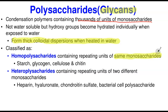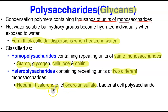Homopolysaccharides contain repeating units of the same monosaccharide. Good examples are starch, glycogen, cellulose, and chitin — all made up of the same monomeric unit. Heteropolysaccharides contain repeating units of two different monosaccharides, so their makeup involves more than one type. Good examples are heparin, hyaluronate, chondroitin, and the bacterial cell wall polysaccharide, which plays an important role in strength, rigidity, and protecting bacteria.